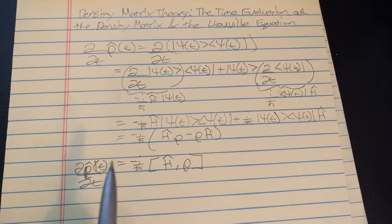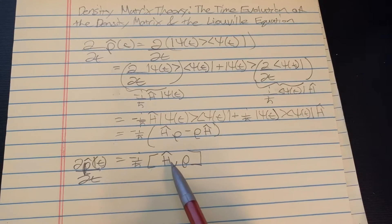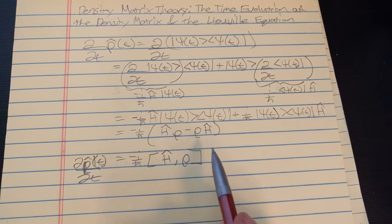We have that the time derivative of the density matrix is equal to negative i over h-bar times the commutator between the Hamiltonian and the density matrix.